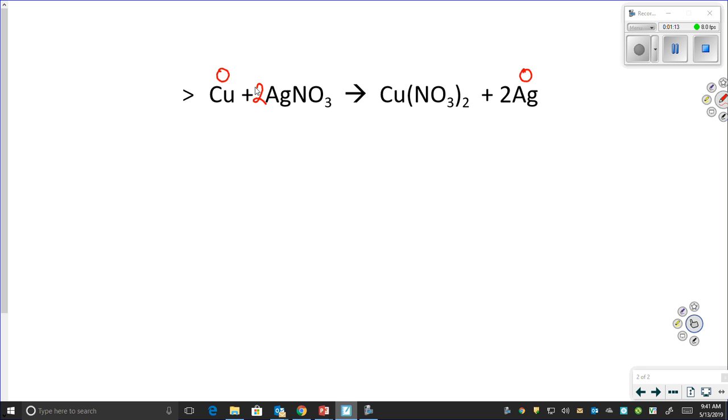The next thing I'm going to do is identify any polyatomic ions. Now, my polyatomic ions are going to be nitrate, and if you look at the nitrates here, they don't break up. There's no change in them.